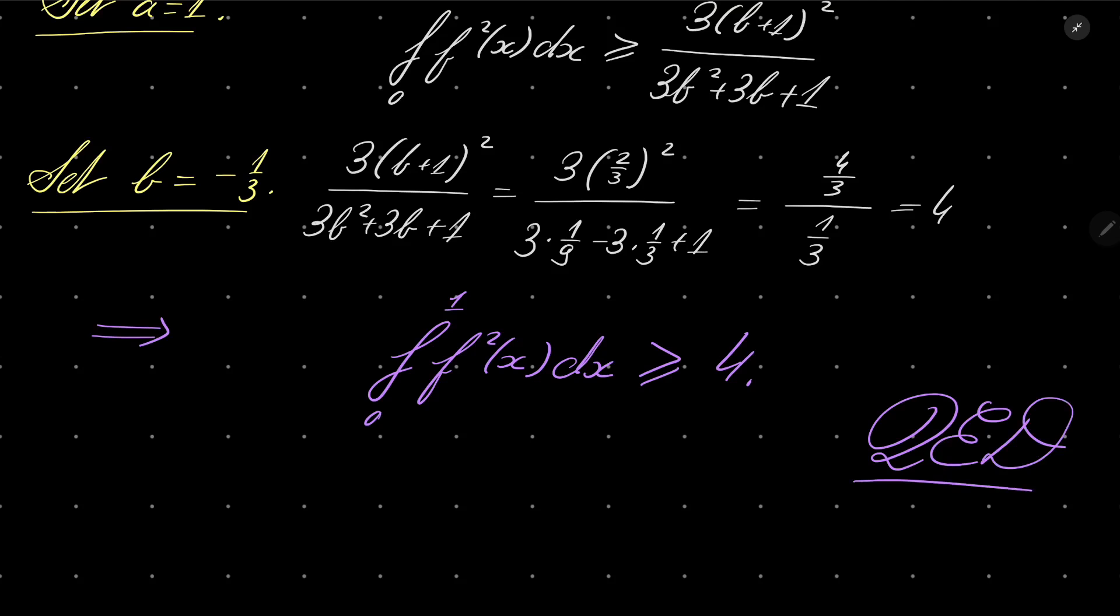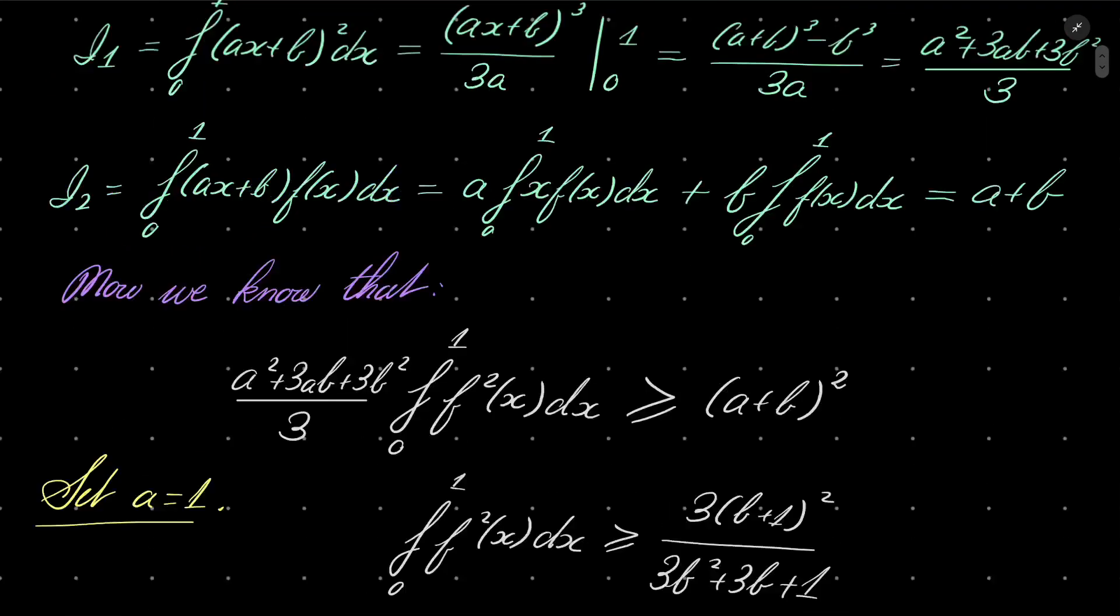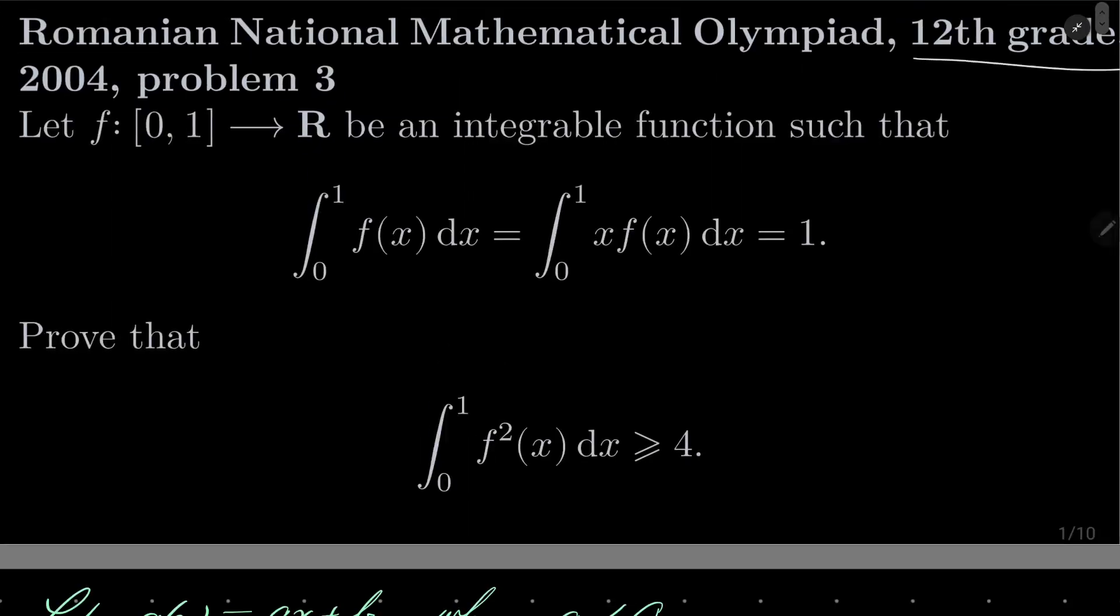Very nice problem, I'd say. Pretty standard, but it's not standard for students of high schools. Recall that this problem was proposed for 12th graders. I'd say that, in general, Romanian Olympiads are very unusual, to say the least. The level of difficulty is very high for 12th graders. But yes, Cauchy-Schwarz inequality is very helpful.